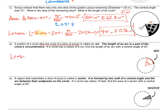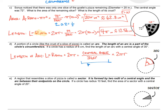Let me formalize that for you. The length of an arc is going to be the central angle divided by 360 degrees times the circumference 2πR. That's the ratio of how much of the circle we have times the circumference. For this specific example, we have a radius of 6 centimeters and a central angle of 30 degrees. So the arc length will be 30 divided by 360, times 2π times 6 centimeters.